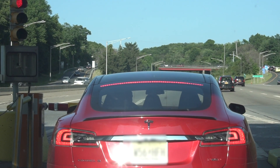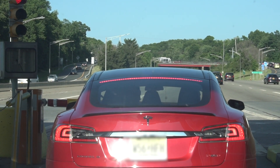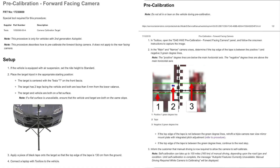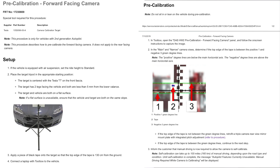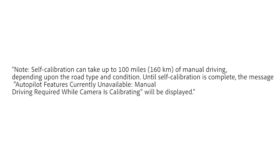For Tesla vehicles with second-generation autopilot, the calibration process on the forward-facing camera can take up to 100 miles of manual driving depending on the road type and condition. Especially for vehicles with owner notifications, it's important that consumers understand they may need to have their vehicle on the roadway for extended periods of time as part of the repair process.